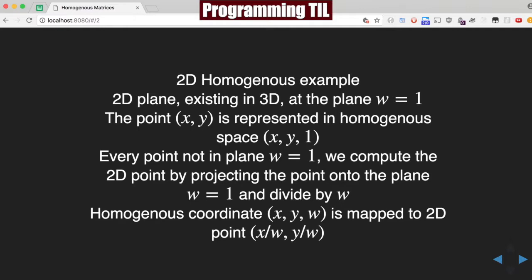Let's give a 2D homogeneous example. So we have a 2D plane which exists in 3D, and the plane is at W of 1, so we have XYW in this case, and it's XY1. Every point that's not in the plane of W equals 1, we can compute into that by projecting a point onto the plane and then dividing by W.